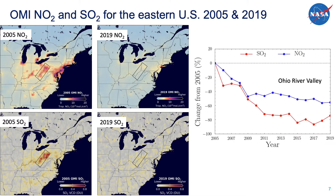The next plot shows the full annual time series from 2005 to 2019 for the area inside the black box on the map — the central part of the Ohio River Valley. NO2 levels rapidly dropped in this region of coal power plants in the first few years of the record and then leveled off at about a 50% reduction. The SO2, however, continued to drop and eventually reached more than an 80% reduction from 2005.